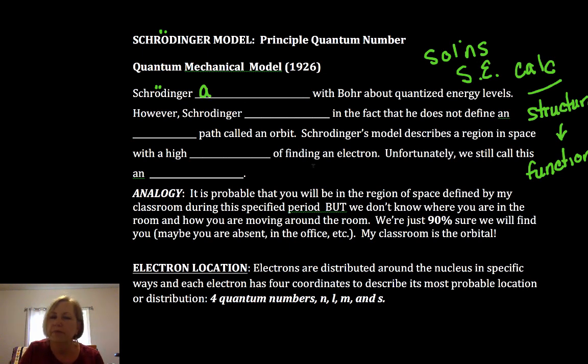Schrödinger, along with many other important historical figures—Heisenberg, de Broglie, there were many involved in this—he agreed, they agreed with Bohr about those quantized, discrete energy levels. That was the best of Bohr, so to speak.